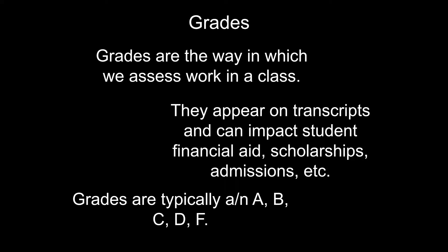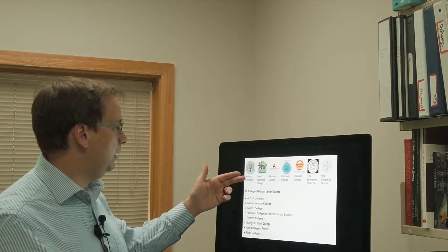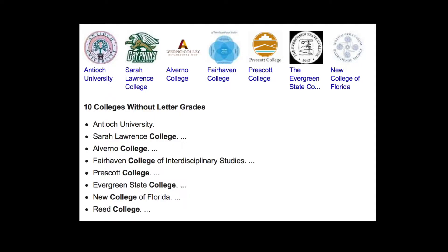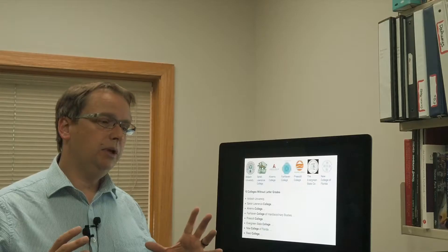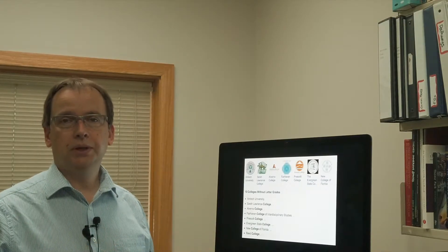Grades are typically A, B, C, D, or F, and you may have heard about some schools out there including Antioch University, Sarah Lawrence College, and Prescott, where they've actually experimented with non-traditional grading systems. So instead of giving students a letter grade, they give them a narrative that describes their work in the class.